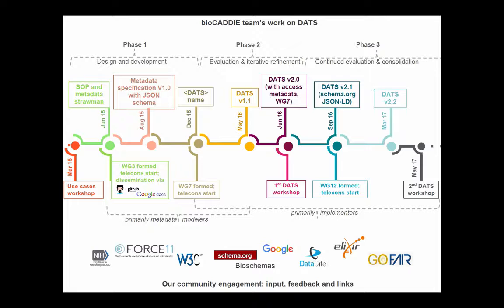Elixir is a project running in Europe about the infrastructure for bioinformatics. You may have heard about the FAIR acronym — Findability, Accessibility, Interpretability, and Reuse. There is a project called FAIR that is about implementing these principles of fairness for data, and we are also engaged with that group.